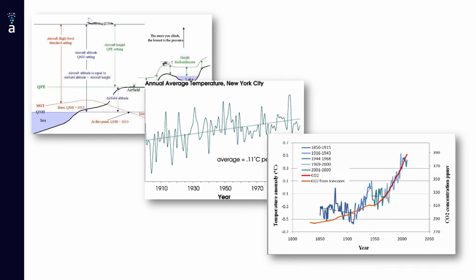If forecasting provides information on normal conditions, prediction addresses what we might call abnormal conditions. For instance, a forecasting example would be: what will the temperature be next year in New York? Or, do I have enough time to go for a run before it rains? Prediction, conversely, would address: what will temperature conditions in New York be in 2050 if CO2 levels increase by 10, 20, or 30 percent? Once you have a developed and enriched model, you can produce forecasting, advanced forecasting, and prediction.